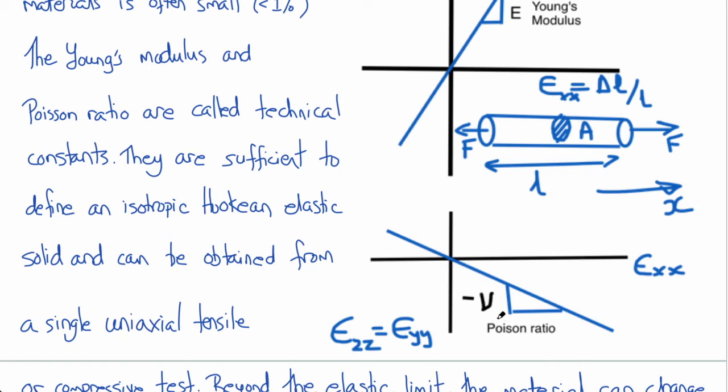And that ratio of the negative shrinkage strain to the positive tensile strain is called the Poisson ratio. And it's typically about 0.3 or 0.4 in many engineering materials.